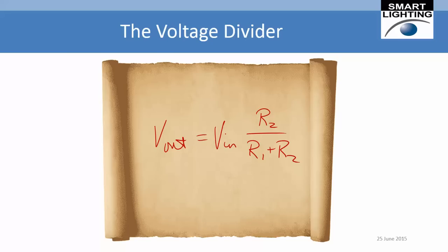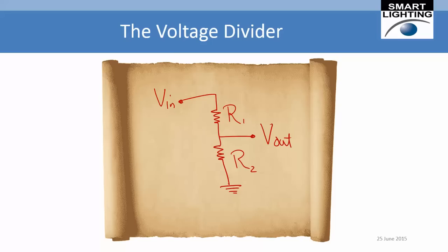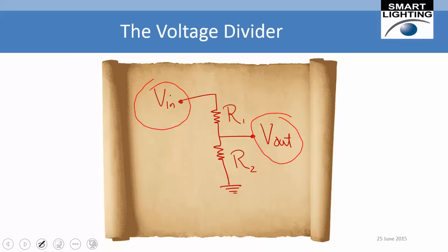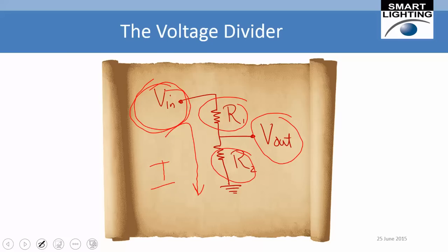One special case to consider: if the two resistors are identical, then the output voltage should be half of the input voltage, because you'll end up with exactly the same voltage across both resistances. Another thing to keep in mind is that the voltage divider only works because there is a current flowing through the circuit, and the same current flows through R1 and R2 — it's actually the current coming from the source. That implies we really can't have any real current going to the output. The voltage divider will only work as long as the exact same current flows through the two resistances.